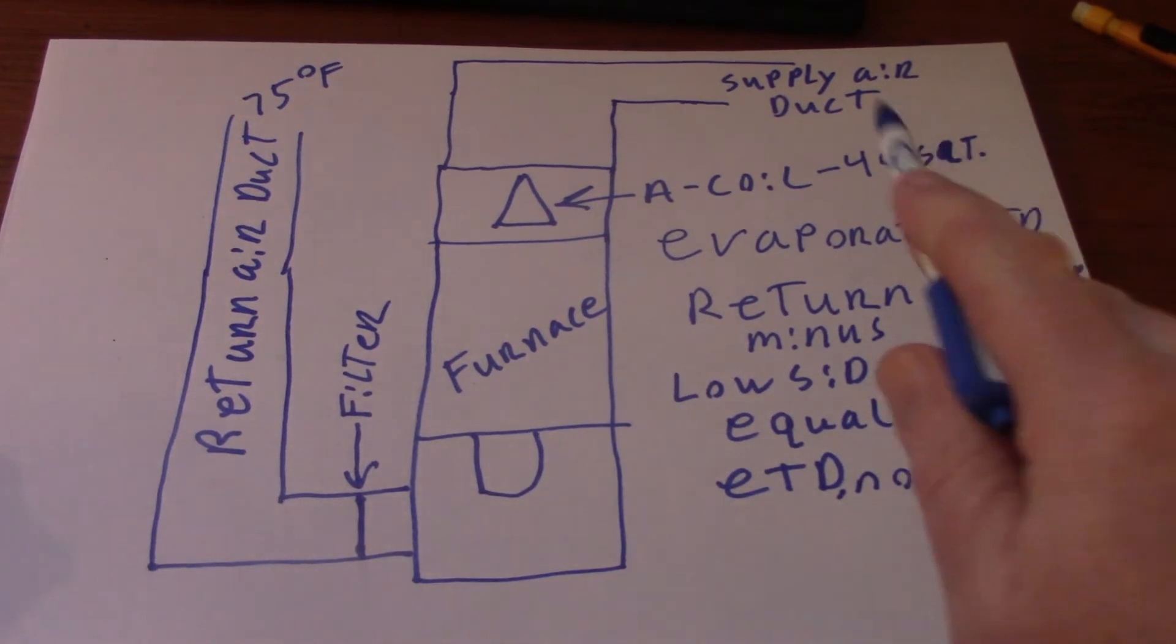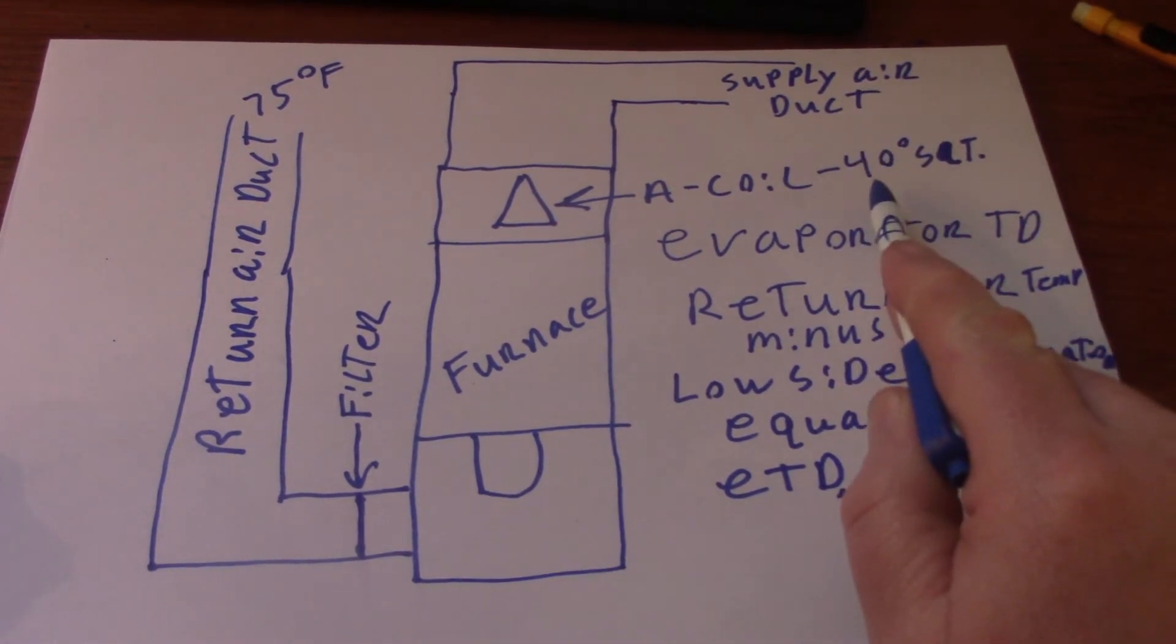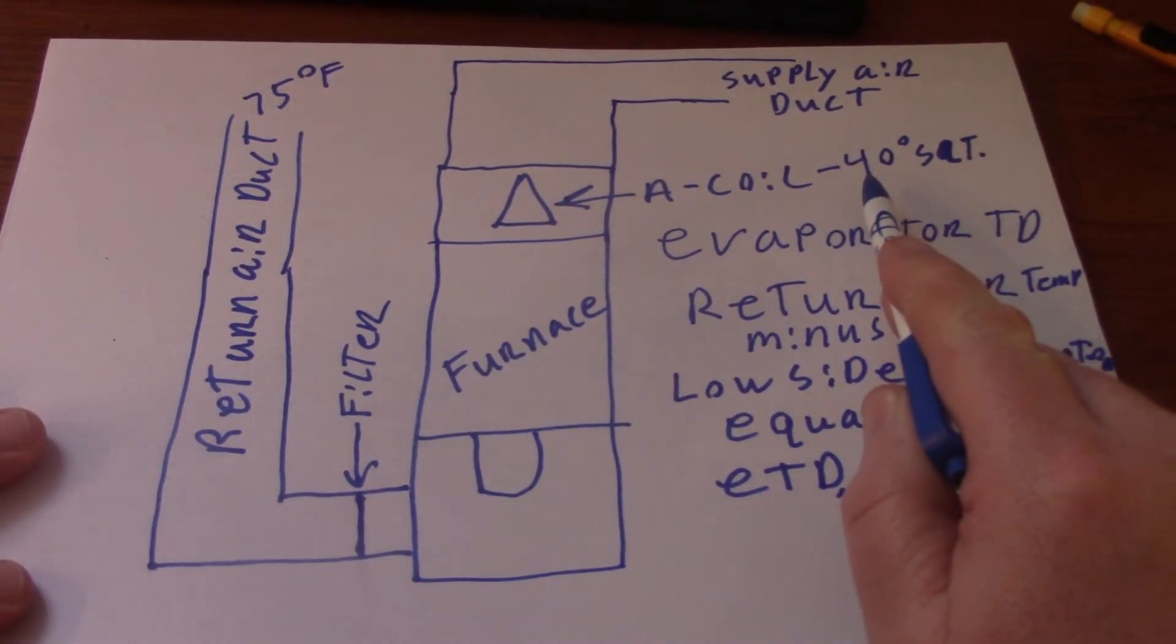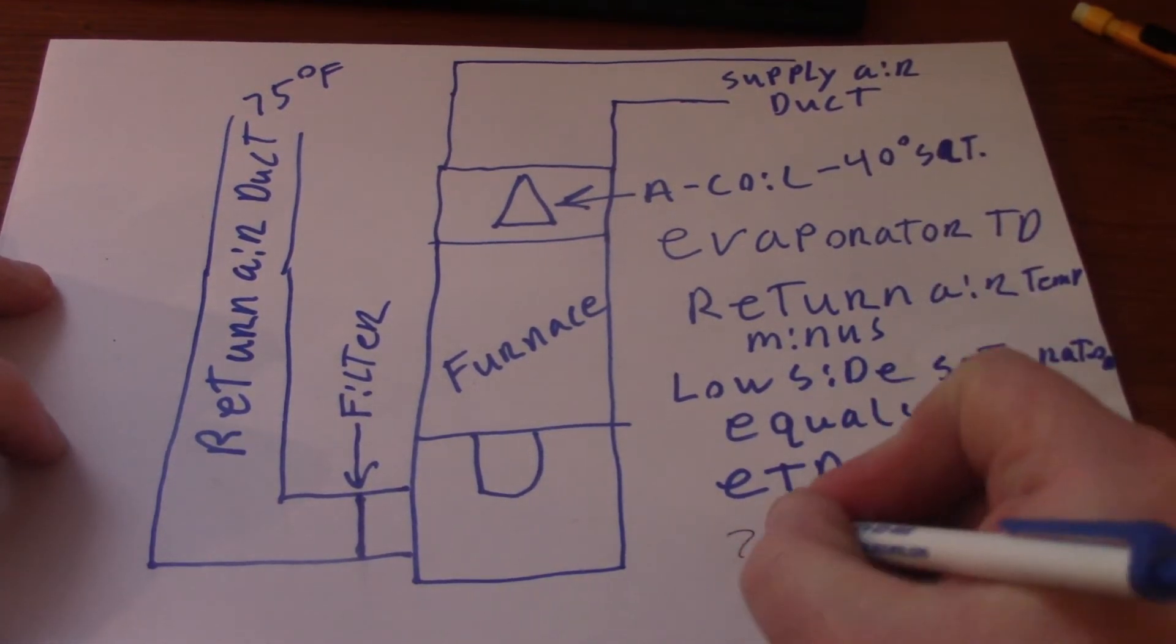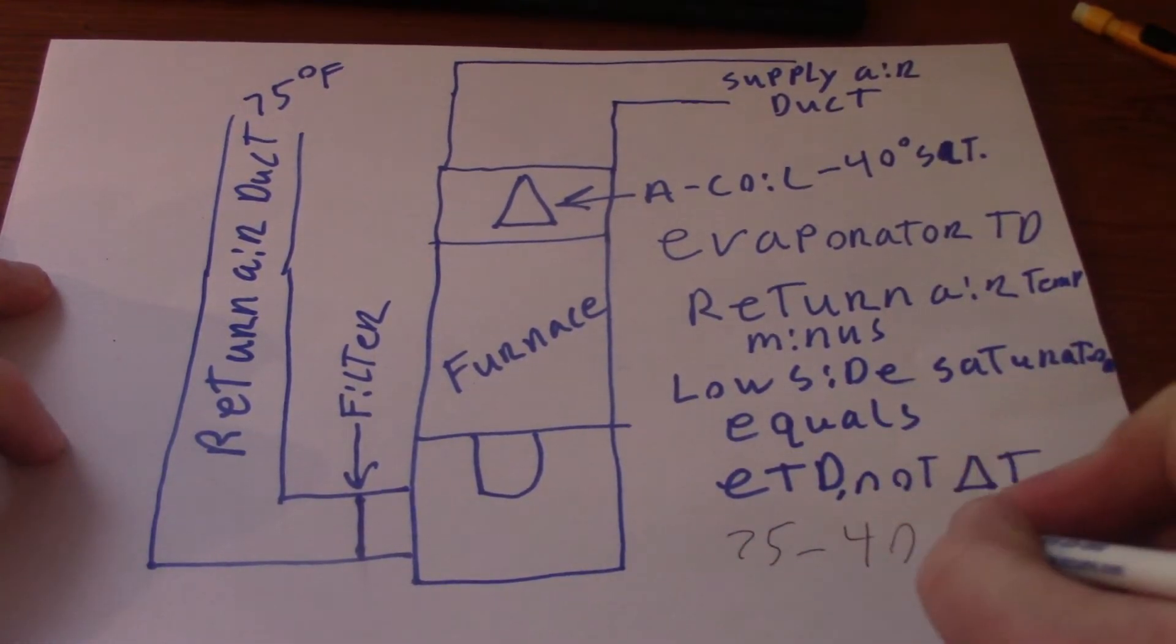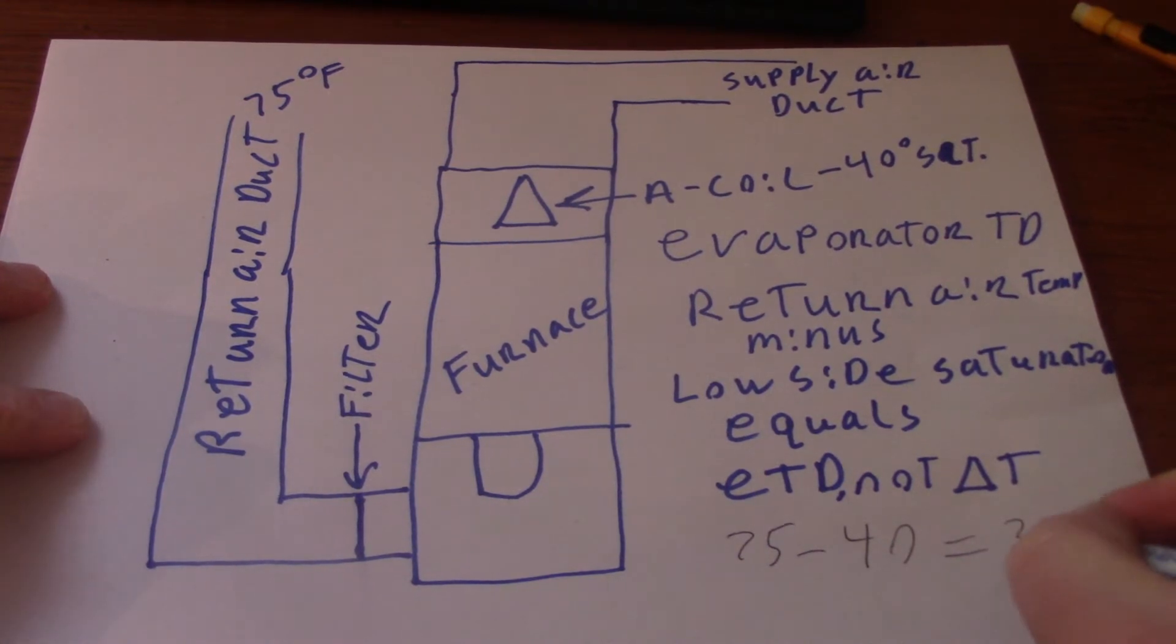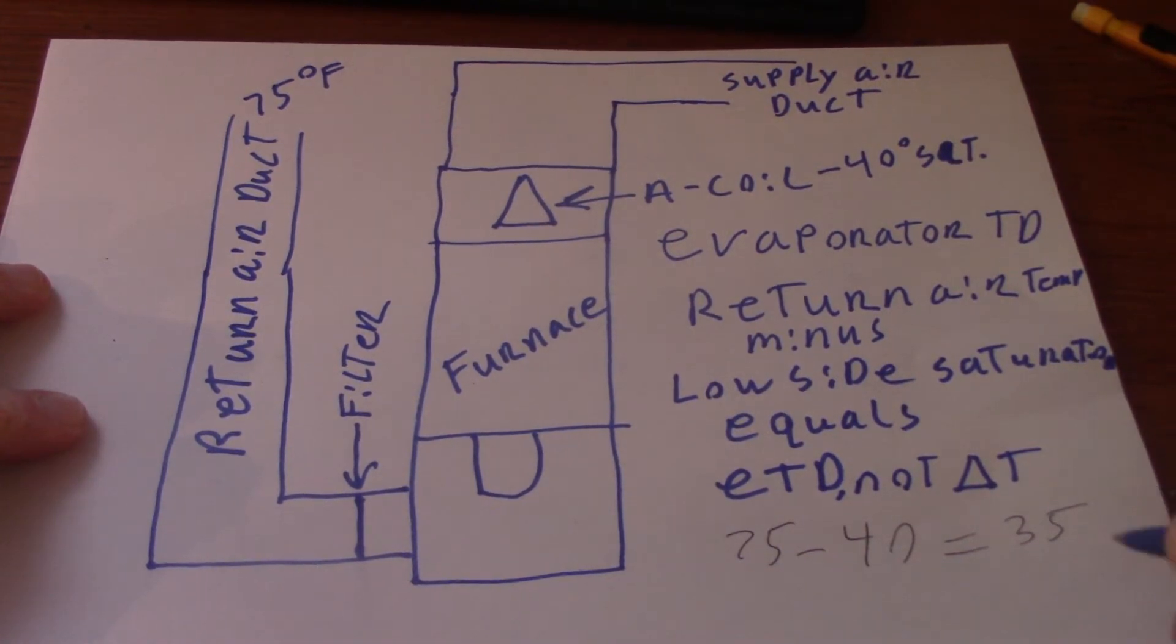As we see here, for most air conditioners you're looking for a 40 degree coil. Manufacturers sometimes vary a little bit, especially if it's Rheem. So you take 75 minus 40 equals 35. That would be your evaporator TD, which is correct for an air conditioner.